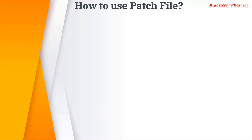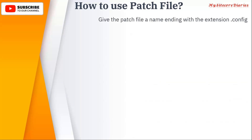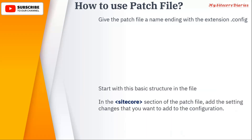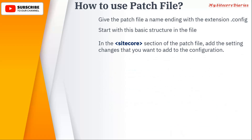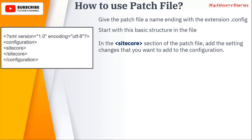Now let's look at how to use patch files. When creating a patch file, the extension should be .config. You start with the basic structure: XML version declaration, then a configuration element. Within the Sitecore section, all your changes should be placed. Patch files can only be used to change configuration within Sitecore — they cannot handle changes in web.config.